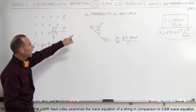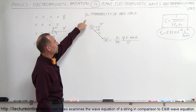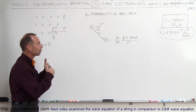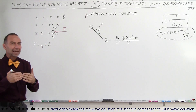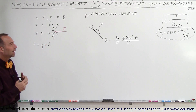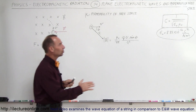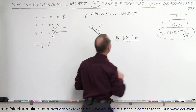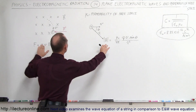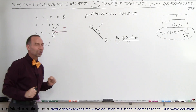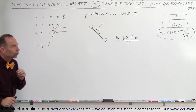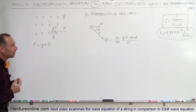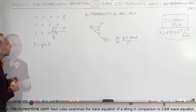Mu sub-naught is used for the permeability of free space. The way we're going to figure out the units and the magnitude is to use the relationship we have here for the magnitude, and we're going to use these two equations for the units of the permeability of free space.